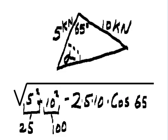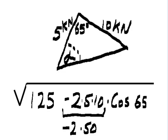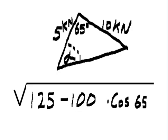5 squared is 25, 10 squared is 100. That's 125. Next I get negative 2 times 5 times 10, that's negative 100. Now, 125 minus 100 is 25. Multiply that times cosine 65.